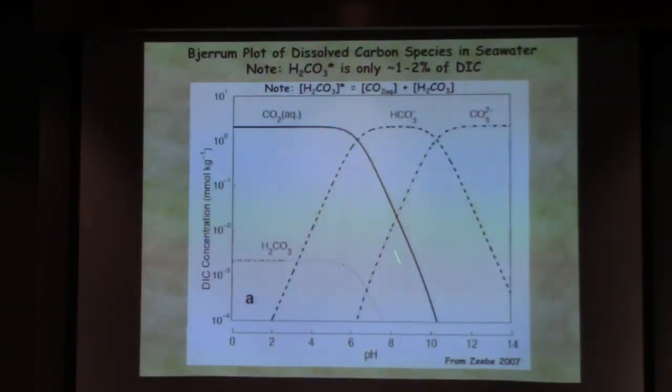As the pH increases, so it moves to the right, carbonate is increasing, carbonic acid is decreasing, and bicarbonate doesn't change all that much in the seawater pH range because you're sort of in that really nice buffering range where bicarbonate is the big inorganic carbon reservoir in the ocean.